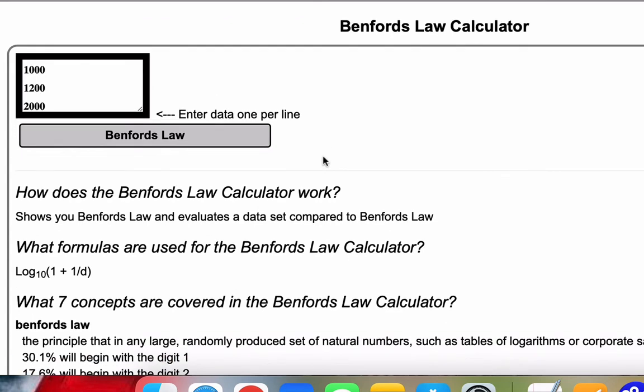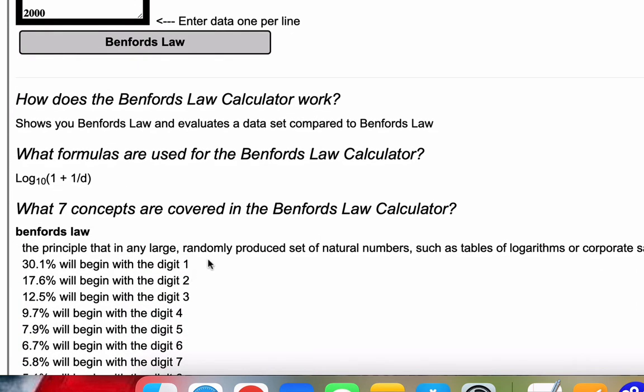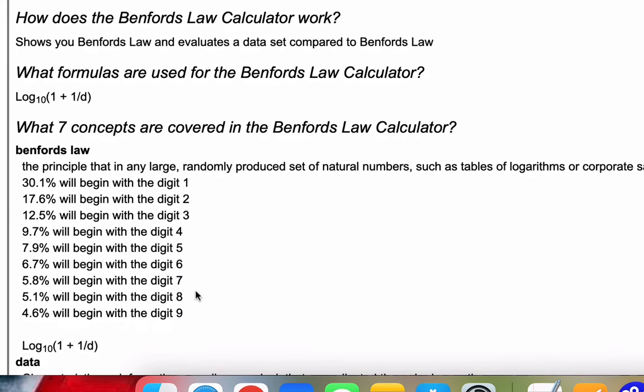Benford's Law is used for fraud detection and sanity checks for random numbers. The principle is that in any large randomly produced set of natural numbers, there's a percentage expectation of the numbers that begin with certain digits 1 through 9. The percentages go down starting with digit 1 through 9.